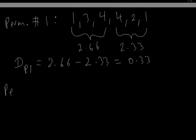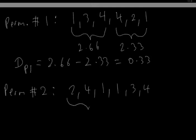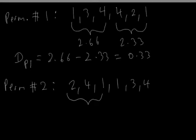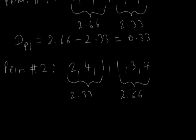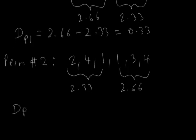Now we take another random permutation, number 2. Let's say that permutation is: 2, 4, 1, 1, 3, 4. We take the mean of the first 3 numbers — 2, 4, 1 — which is 2.33, and the mean of the second 3 numbers — 1, 3, 4 — which is 2.66. The difference for permutation 2, d(p2), equals 2.33 minus 2.66, which is −0.33.